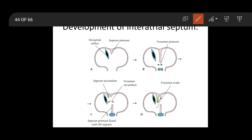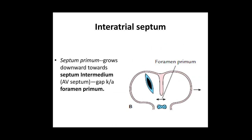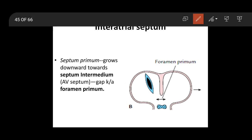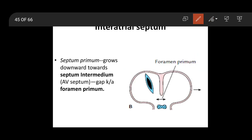The lower margin of the septum primum and the upper margin of the septum secundum are represented by the limbus fossa ovalis. Looking at the diagram again: the septum primum grows downwards toward the septum intermedium; until fusion, the gap is the foramen primum. The sinoatrial orifice has two valves — the left venous valve and the right venous valve — and both venous valves fuse with the roof of the atrium to form the septum spurium.